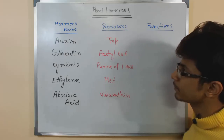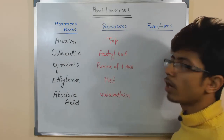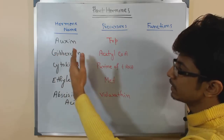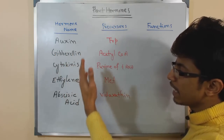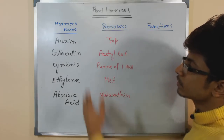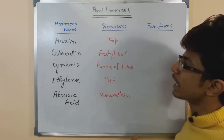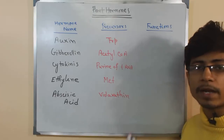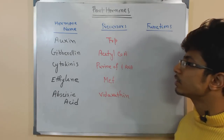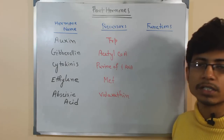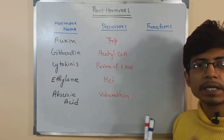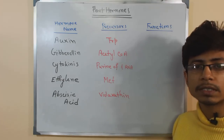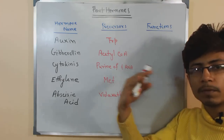The five major plant hormones we talk about are auxin, gibberellin, cytokinin, ethylene, and abscisic acid. Auxin has a precursor amino acid called tryptophan, so auxin is produced from tryptophan. The major function of auxin is apical dominance of the plant. Auxin is synthesized at the tip of the shoot as well as the tip of the root, though production is greater at the shoot tip.